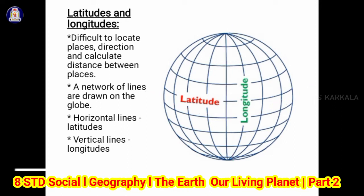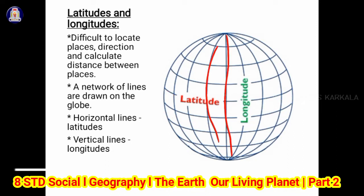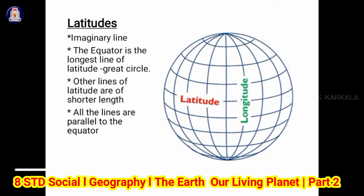We have a network of lines which are drawn on the globe. Can you see the horizontal lines here? These are called latitudes, and the vertical lines are called longitudes. When these two lines are drawn, they intersect at right angles and create a network which is called a grid, also known as a graticule. Now let's learn about latitudes.